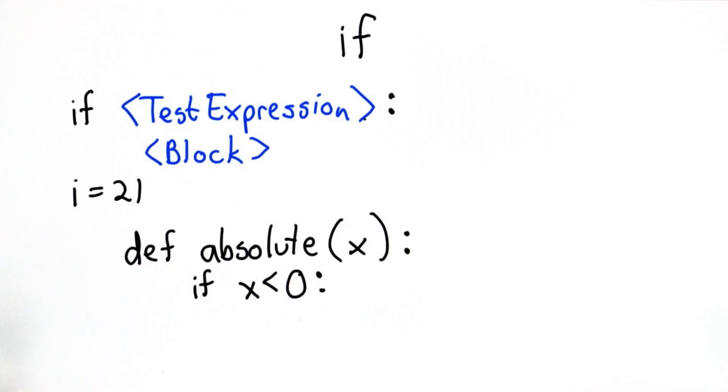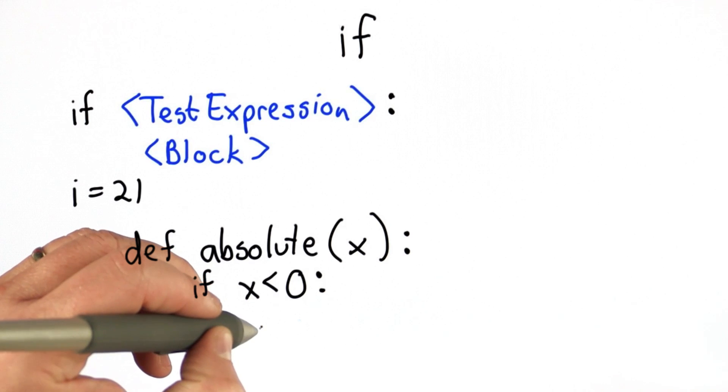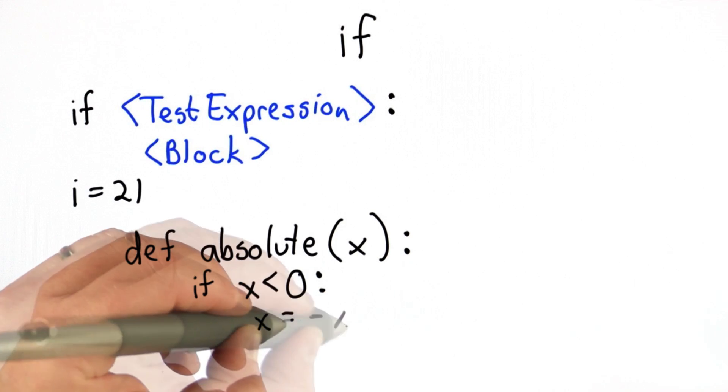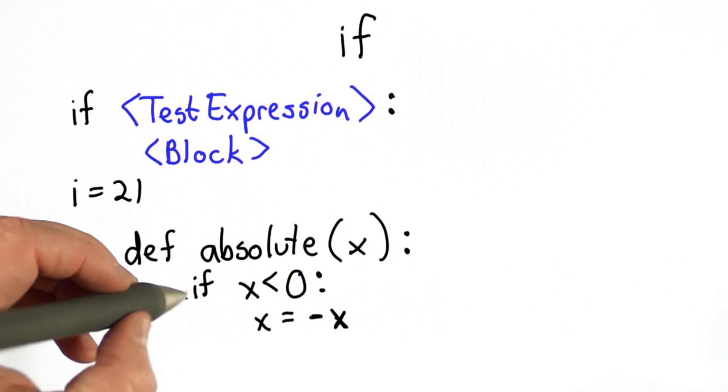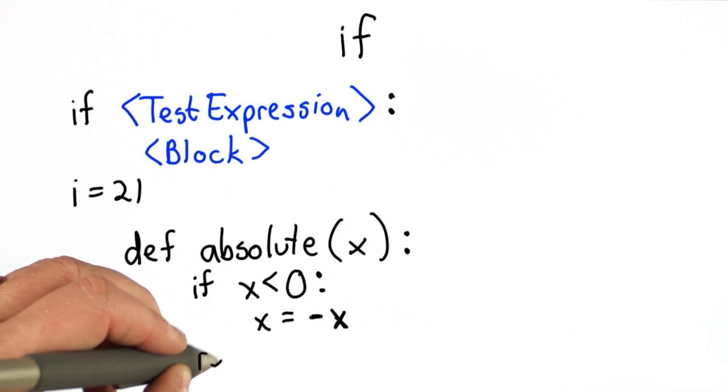We have the if, followed by the test expression, x is less than 0. In the block, we're going to have one statement, which changes the value of x to be negative x. The next statement, which will happen after the if, whether the test was true or false, will return x.